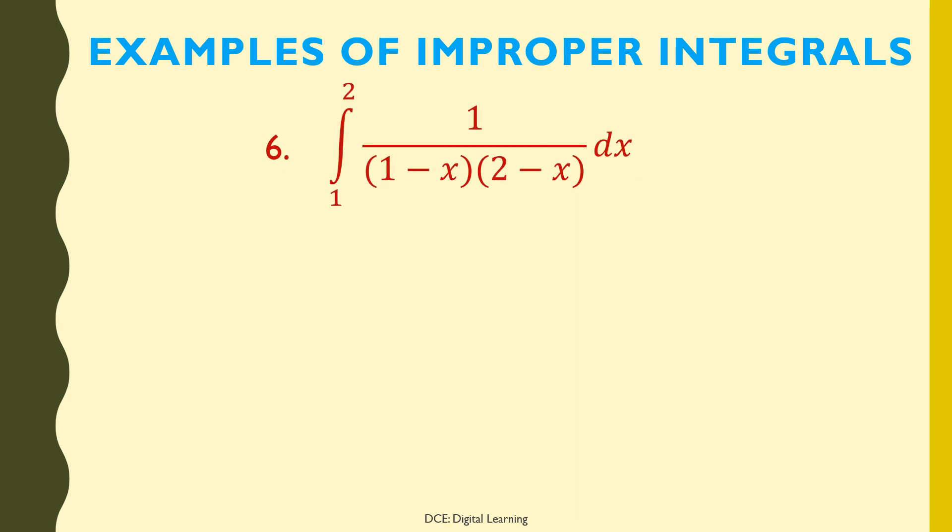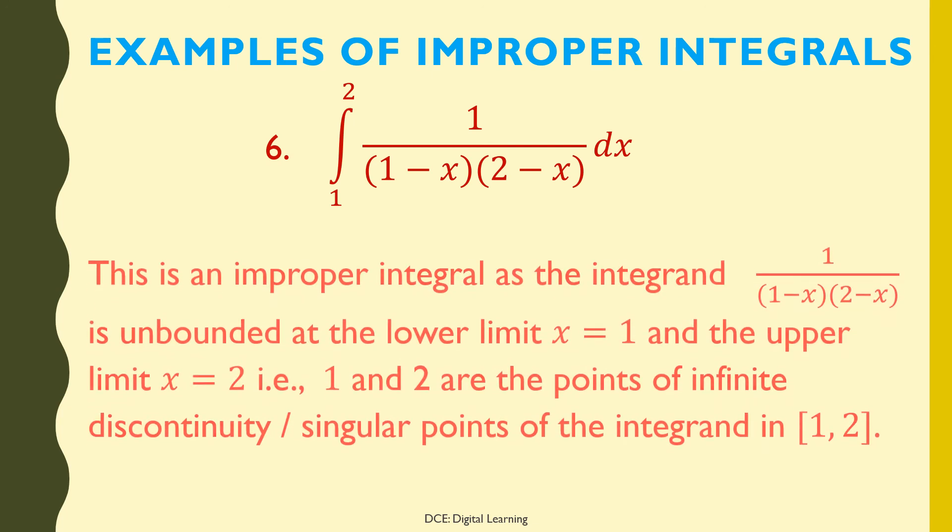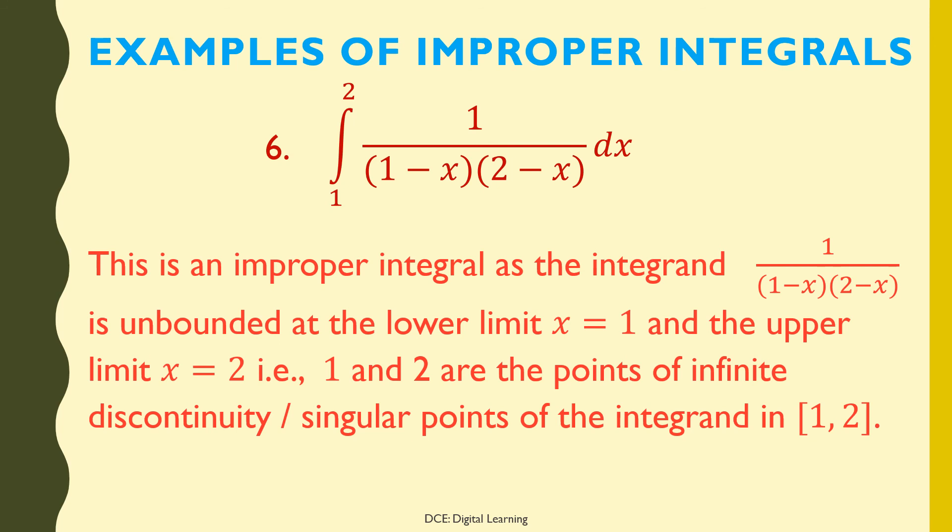Sixth example: ∫1/((1 − x)(2 − x)) dx from 1 to 2 is an improper integral, as the integrand 1/((1 − x)(2 − x)) is unbounded at the lower limit x = 1 and the upper limit x = 2 — that is, 1 and 2 are points of infinite discontinuity or singular points of the integrand in the closed interval [1, 2].